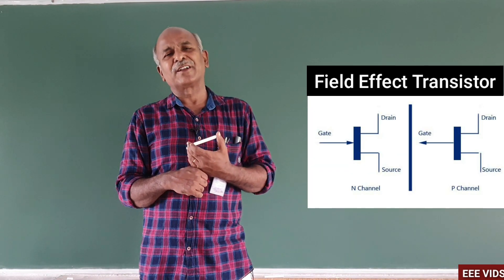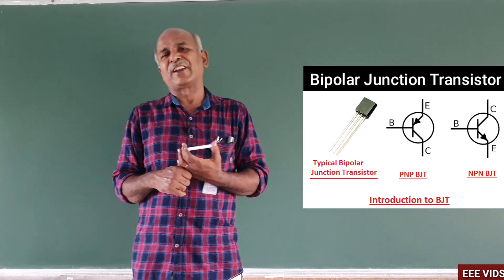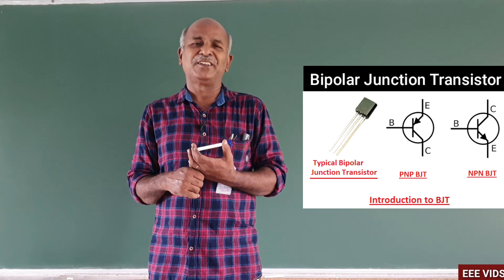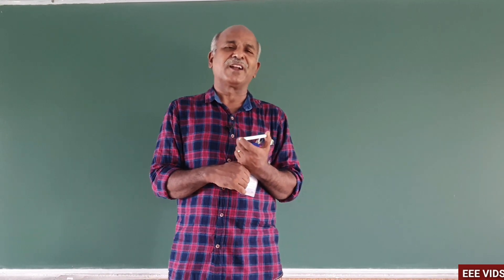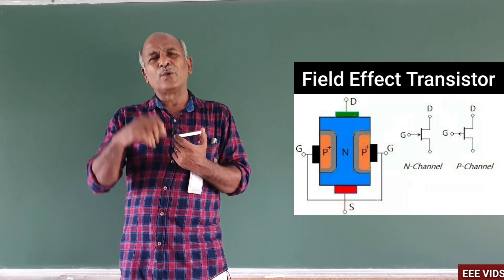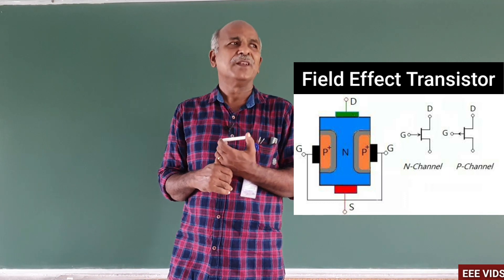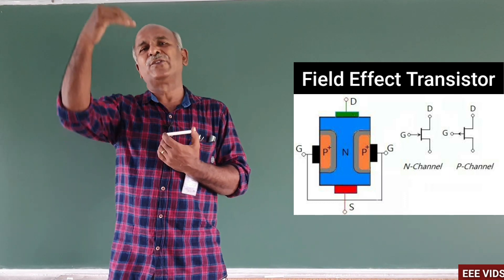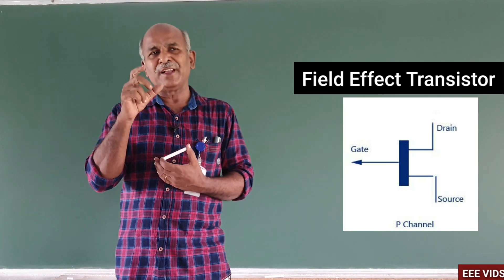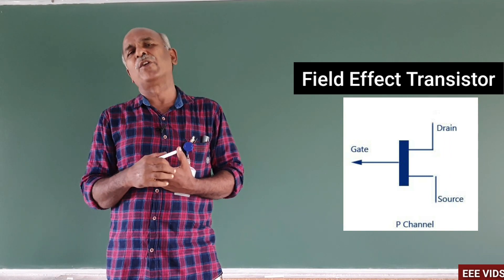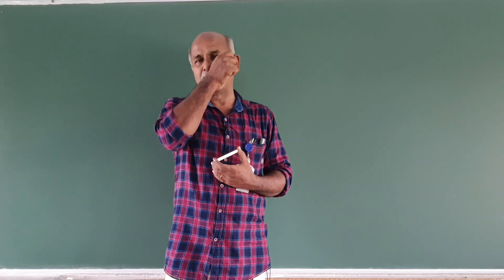In BJT, we have emitter, base, and collector — it is a bipolar device with two junctions where both p-type and n-type carriers move. In the case of the field effect transistor, only one type of carrier moves. In an n-channel bar, electrons carry the drain-to-source current. In a p-channel bar, holes carry the drain-to-source current. So the current is due to only one carrier, making FET a unipolar device. BJT is a bipolar device and FET is a unipolar device.